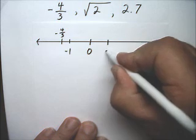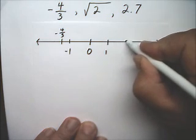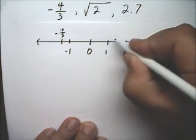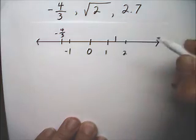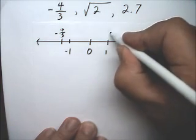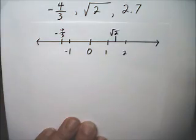So if this is positive 1 and this is positive 2, 1.4 is just a little less than 1.5. So there's the positive square root of 2.